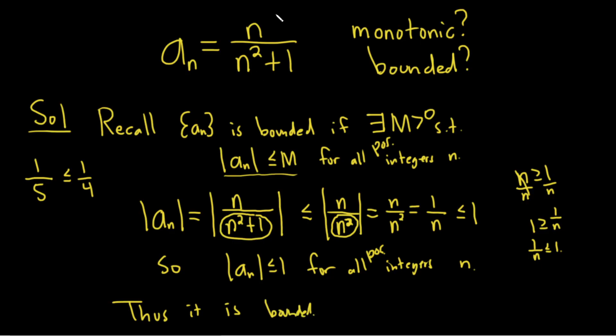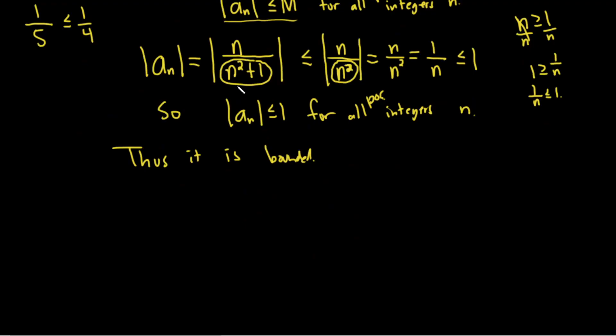So to show it's monotonic, what we're going to do is, again, we're going to take a really rigorous approach here. So I'm just going to let f be equal to x over x squared plus 1. So we're thinking of our sequence, which was a sub n, n over n squared plus 1, as a function of x. And the reason we're doing that is because we're going to take the derivative and see if it's positive or negative.